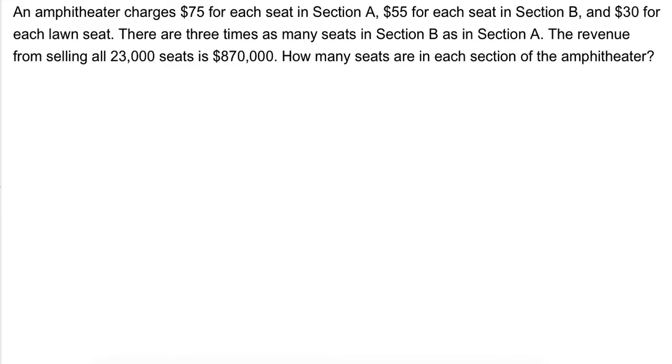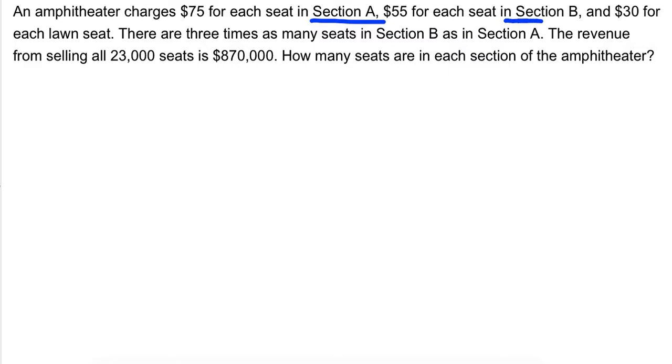The last example I wanted to go over is a real-life application. It says an amphitheater charges $75 for each seat in Section A, $55 for each in Section B, and $35 for each in lawn seats. There are three times as many seats in B as there are in A. The revenue from selling all 23,000 seats is $870,000. How many seats are in each section of the amphitheater? So in this problem, instead of having x, y, and z, maybe I'll use A, B, and C. A is Section A, B is Section B, and C will be the lawn seats. So, the first statement says there are three times as many seats in B as there are in A. So, if I know how many are in A, and I take that times three, that should give me B.